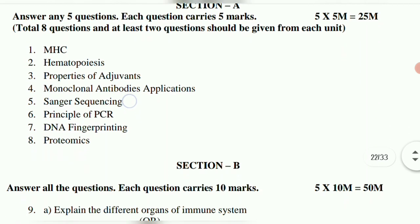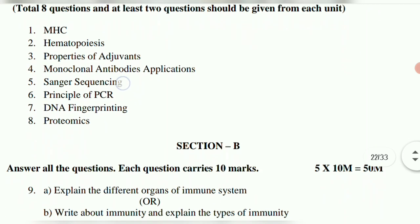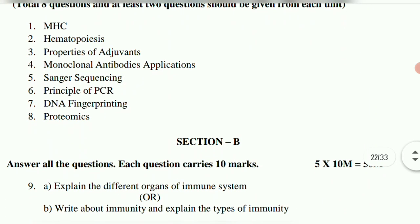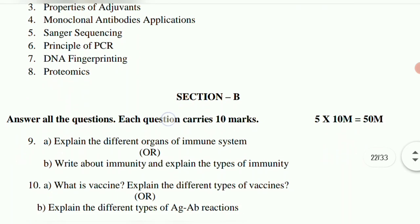Essay questions: 9th A — explain the different organs of the immune system. B — write about immunity and explain the types of immunity. 10th A — what is a vaccine, explain the different types of vaccines.